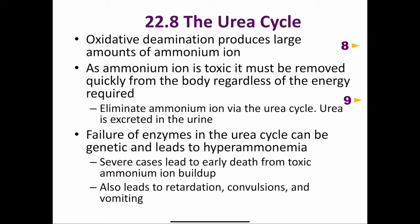Oxidative deamination produces large amounts of the ammonium ion. Because ammonium ions are extremely toxic, they must be removed from the body regardless of the energy expenditure required. In humans, they are detoxified in the liver by converting the ammonium ions into urea.